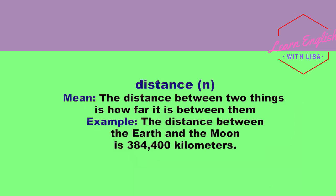Distance. The distance between two things is how far it is between them. The distance between the earth and the moon is 384,400 kilometers.